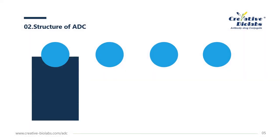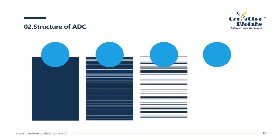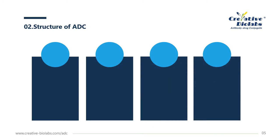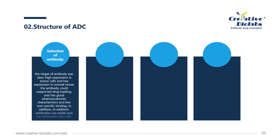The structure of ADC drugs is more complex, and there are great differences between different ADC drug designs. The ideal ADC drug design needs to consider the following factors. For antibody selection: the target of the antibody should be clearly expressed at high levels in tumor cells and low levels in normal tissue; the antibody should support drug loading, have good pharmacokinetic characteristics, less nonspecific binding, be stable, and be able to internalize into cells. Lysine or cysteine residues are generally present at junction sites, which can be modified for directional coupling.